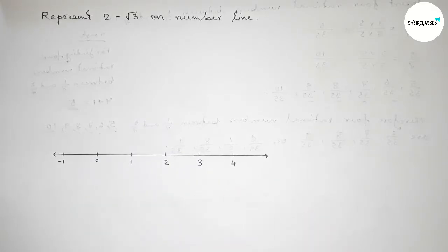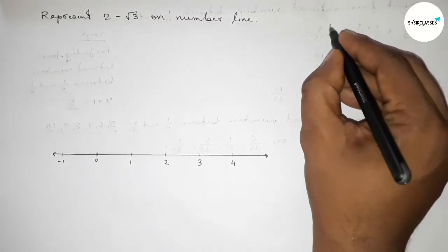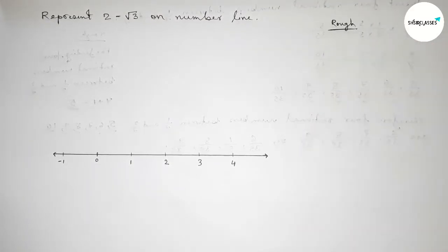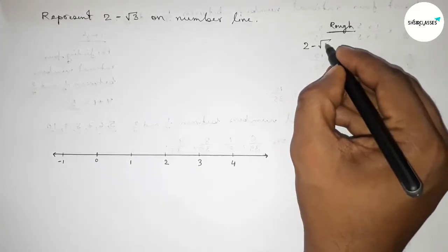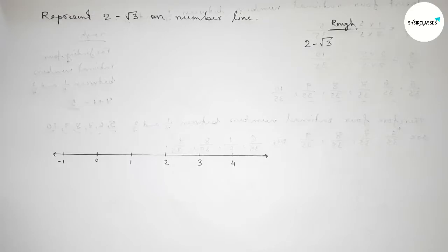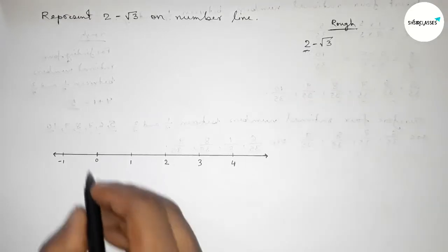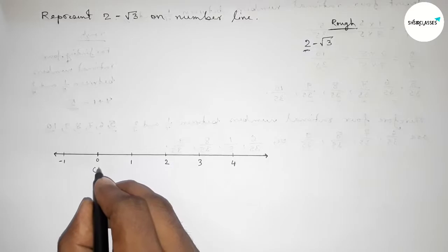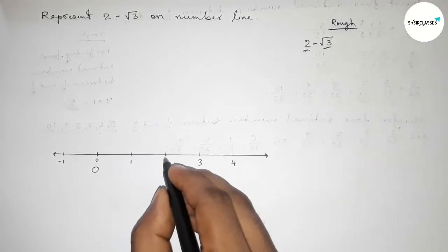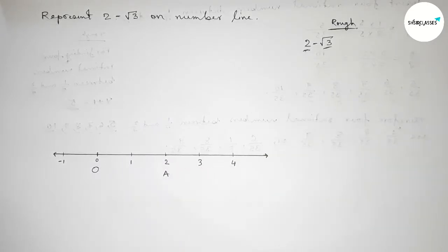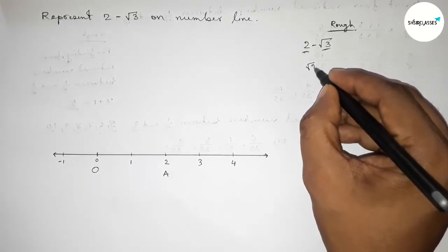Taking points here: minus one, one, two, three, four, and so on. Now roughly discussing some important calculations. We have to represent 2 minus root 3 on the number line. Here given 2, so from zero to two, taking point O and point A. Now we have to represent root 3 - but before that we must first represent root 2, then we can represent root 3.